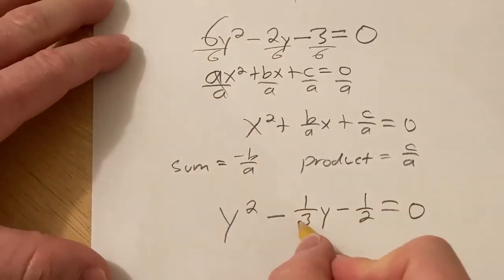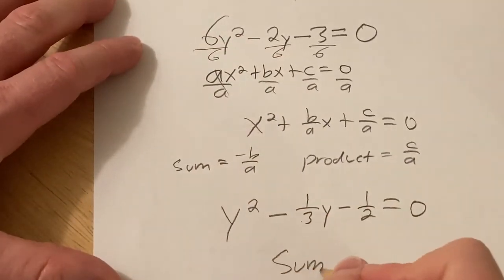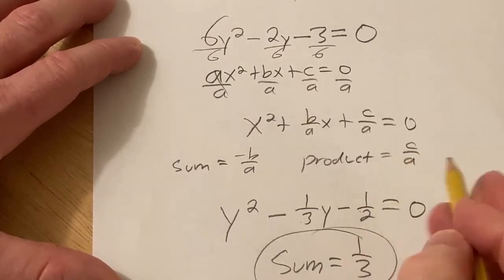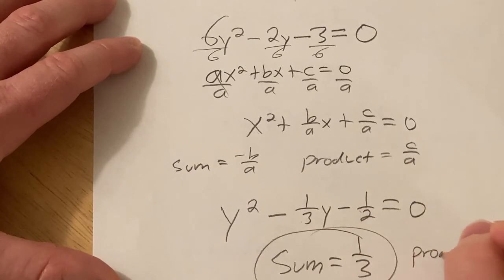And the sum is the opposite of this, so the sum of the roots will be 1 third, and the product will be this. The product will be negative 1 half.